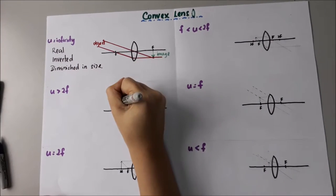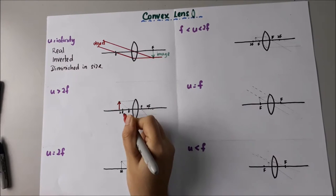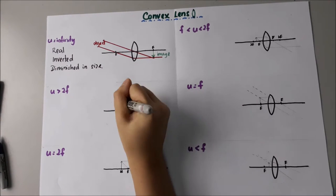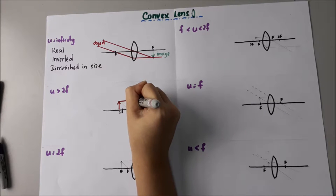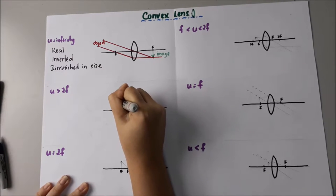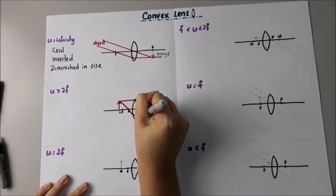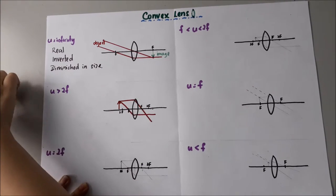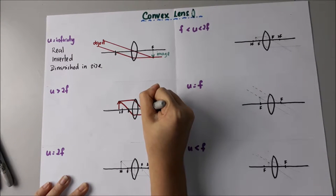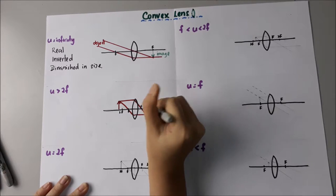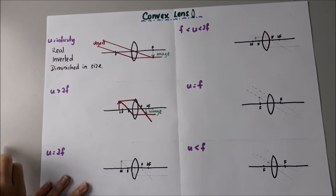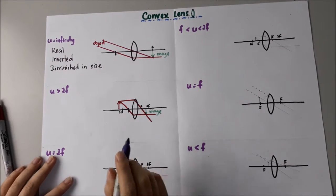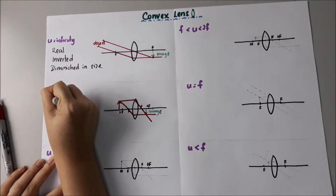When the object is greater than 2F, you can see that the image is also real.